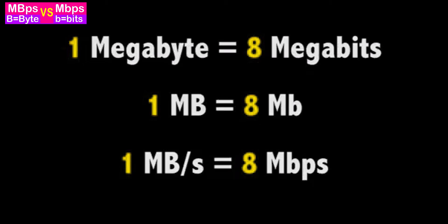In computer language, lowercase 'b' stands for bits and uppercase 'B' stands for bytes. One byte is equal to 8 bits. So when you see Mbps with a lowercase 'b', that means megabits per second, and 1 byte equals 8 bits.